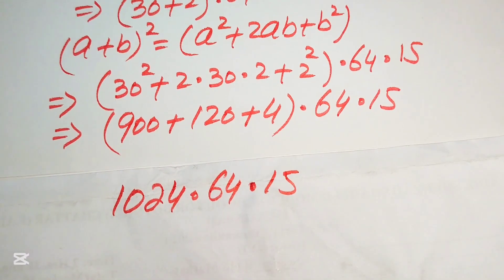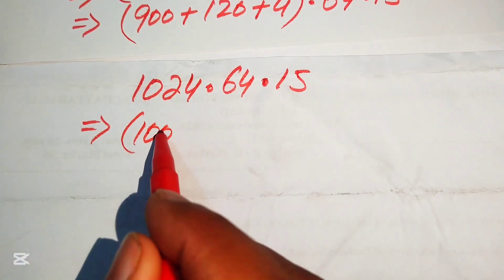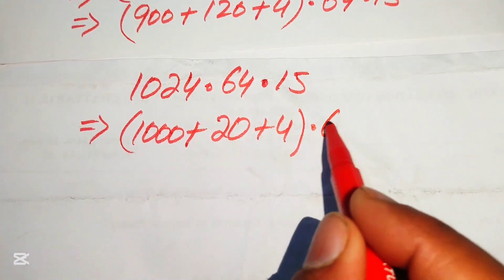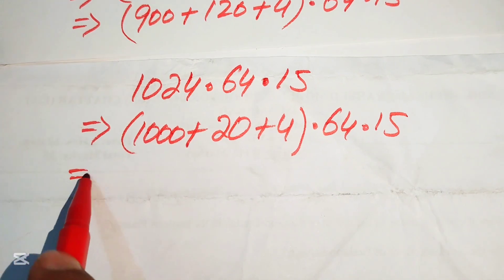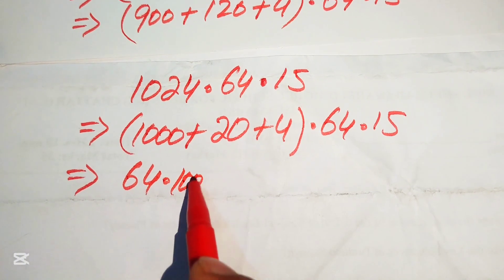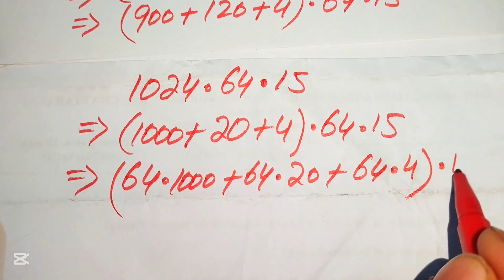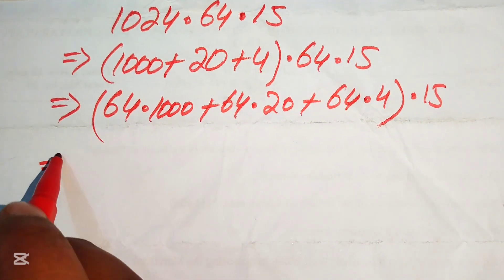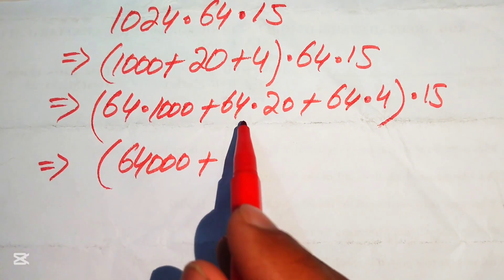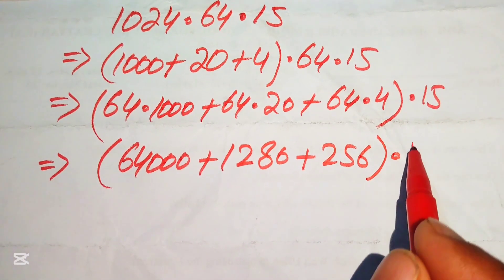We break 1024 as 1000 plus 20 plus 4, multiplied by 64 and 15. Distributing the multiplication by 64 across all terms: 64 times 1000 equals 64,000; 64 times 20 equals 1,280; and 64 times 4 equals 256. The whole result is then multiplied by 15.